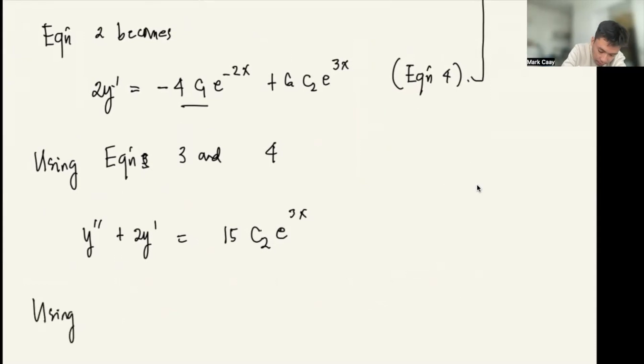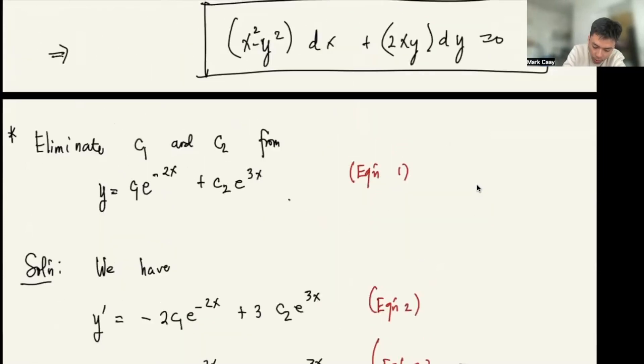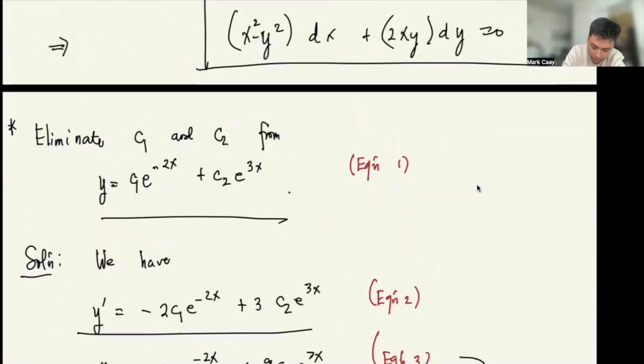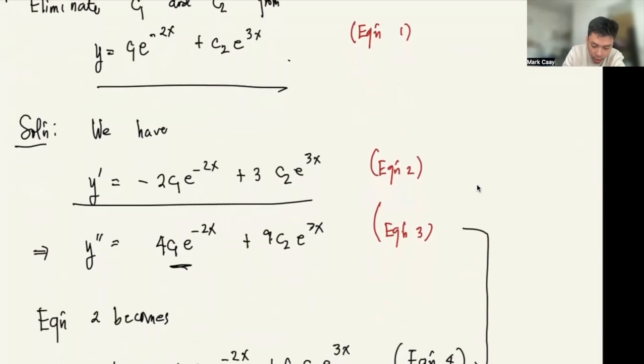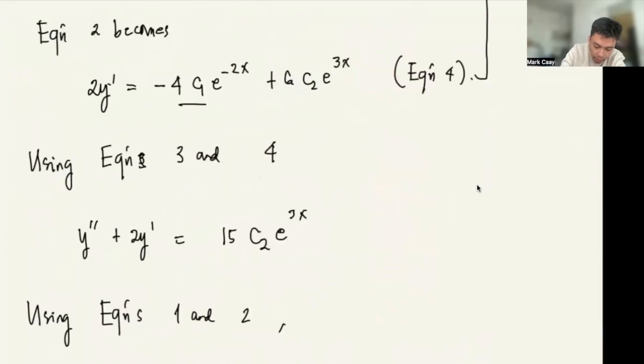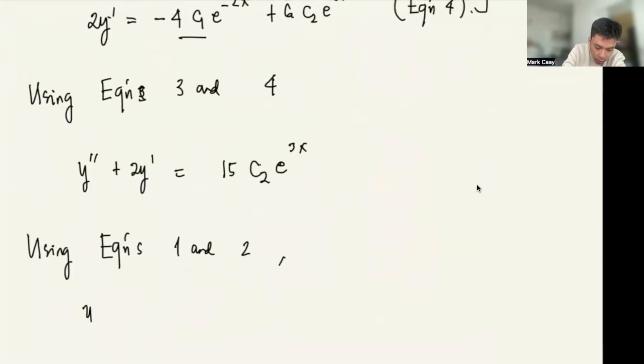Also using equations 1 and 2, let's compare them. If I multiply equation 2 by 2 and add, I get y prime plus 2y equals 5c2 e to the 3x.